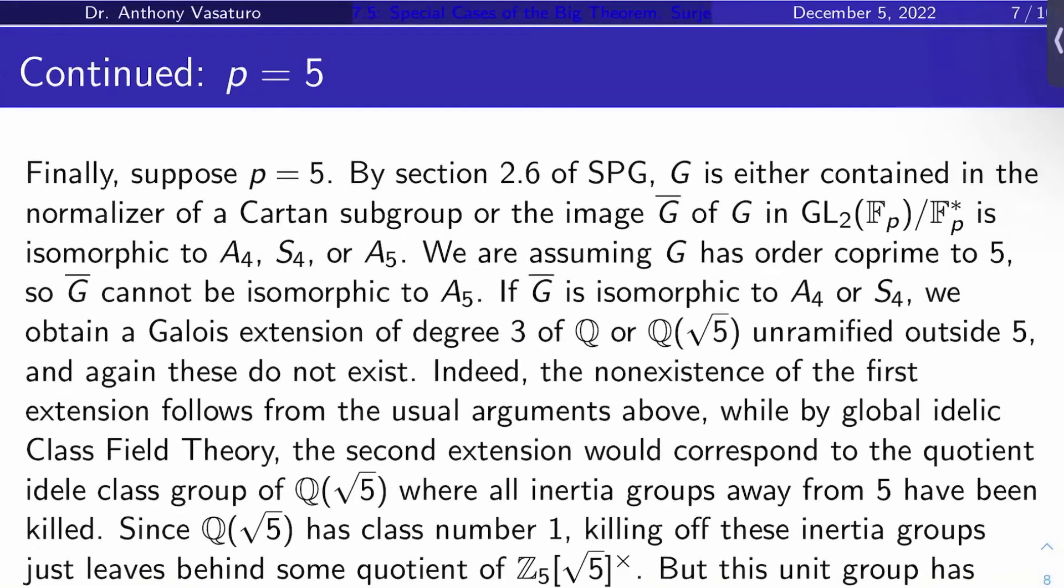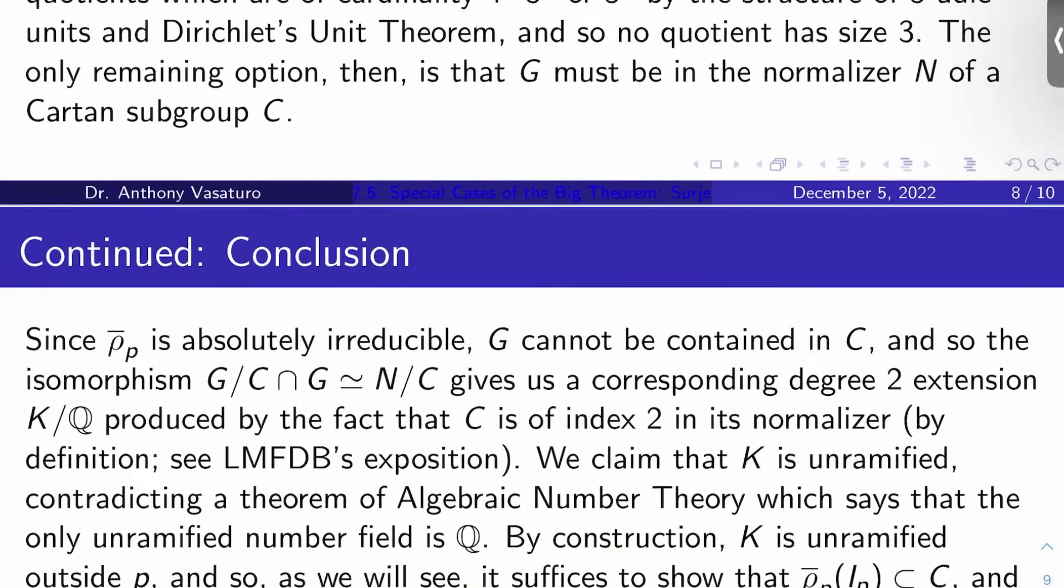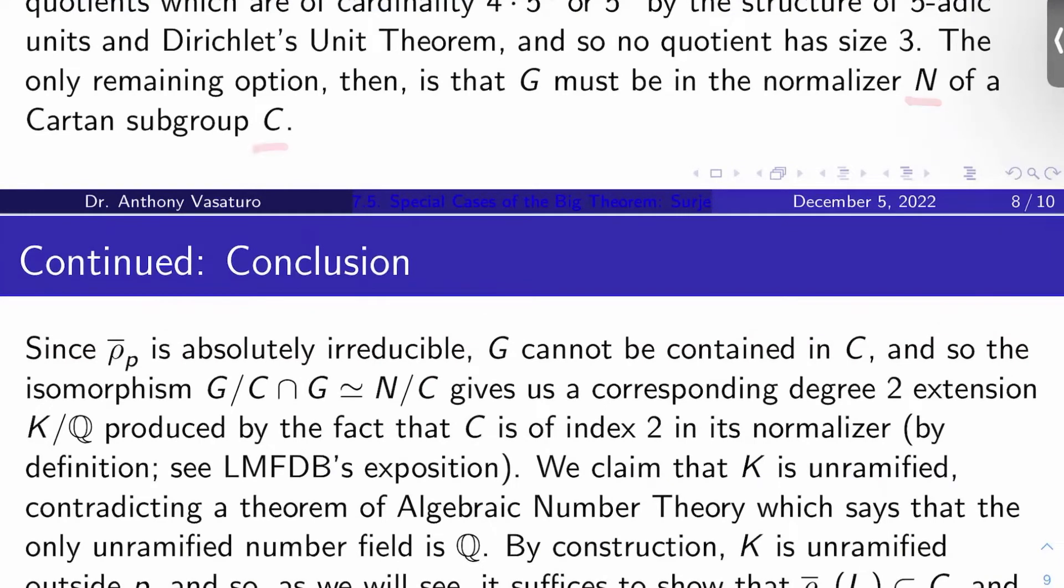But this unit group has known structure. It has quotients which are of cardinality 4 times 5 to the n or 5 to the n for some n by the structure of the 5-adic units. And, for example, Dirichlet's unit theorem, all this would be in Neukirch. Well, none of these have size 3, so there's the contradiction. So we're not any of this stuff here. So the only other possibility is that G is contained in the normalizer of a Cartan subgroup.